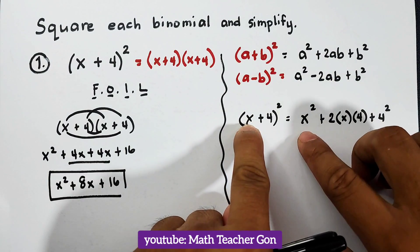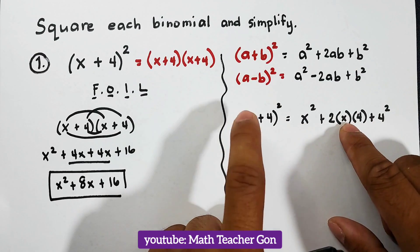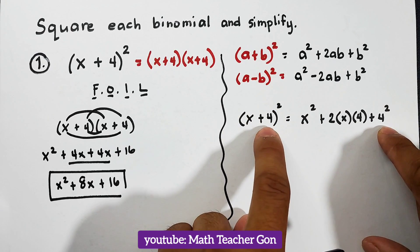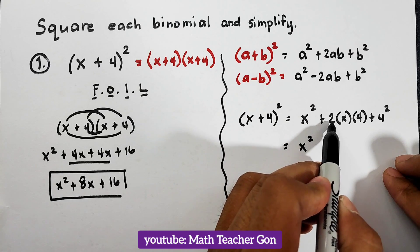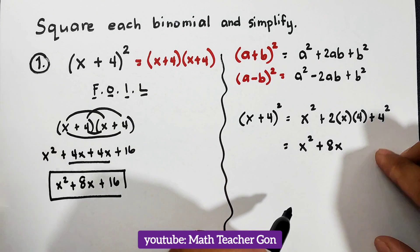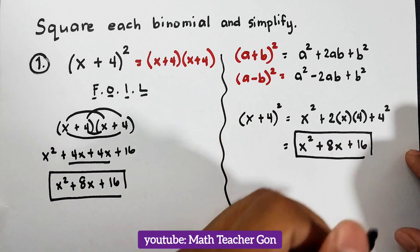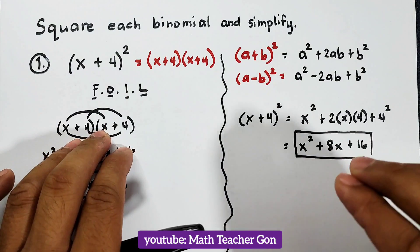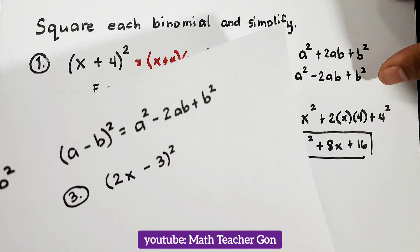Let's simplify: x squared stays as x squared; 2 times x is 2x, times 4 is plus 8x; and 4 squared is plus 16. This is the answer. As you can see, comparing the answers — they are the same using the FOIL method and the square of binomial pattern. Now let's do two more examples.